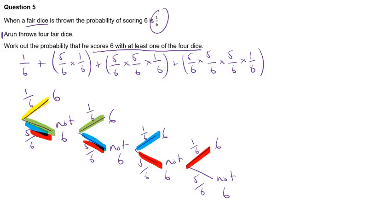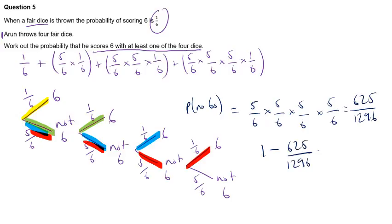If we think, well, the only possible way here to not get at least one six is to get not six every time. So that will give us five-sixths times five-sixths times five-sixths times five-sixths. Okay, this is the probability of no sixes we have here. So that will give us 625 out of 1296. Now this isn't the answer because we want the probability of scoring at least one six. We need to do one take away this probability.